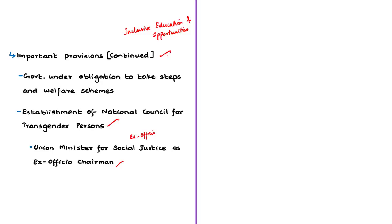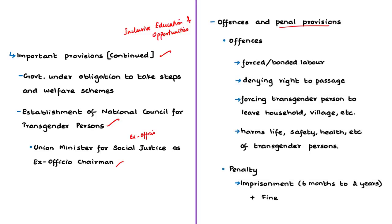The act provides for penalizing persons who compel transgender persons to indulge in forced labour or bonded labour, deny a transgender person the right of access to a public place, force or cause a transgender person to leave their household or village or other place of residence, or endanger the life, safety, health, or mental or physical well-being of transgender persons. Such persons shall be punishable with imprisonment for a term of not less than 6 months and may extend to 2 years, and also with a fine.